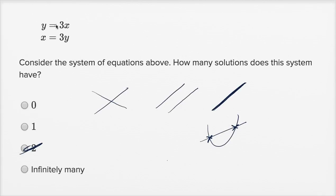But let's just think about these. What I like to do is solve them both explicitly for y. That's how I like to visualize lines. This first one is already written explicitly in terms of y. The second one, let's divide both sides by three,